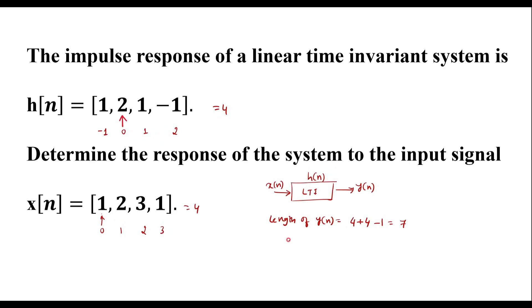Now let us find the range of the output sequence. The lower range of h of n is minus 1, and the lower range of x of n is 0, so minus 1 plus 0 is minus 1. The upper range of h of n is 2 and the upper range of x of n is 3, so 2 plus 3 is 5. Therefore, the range of y of n varies from minus 1 to 5.